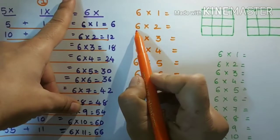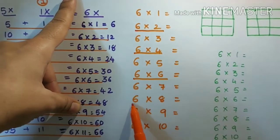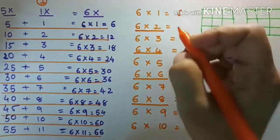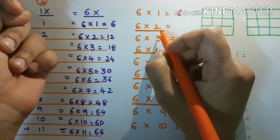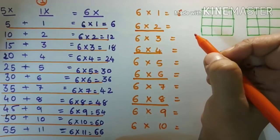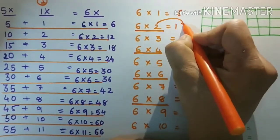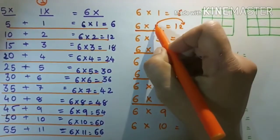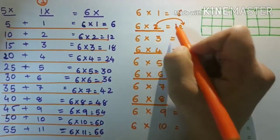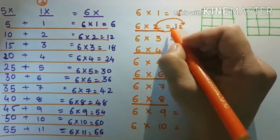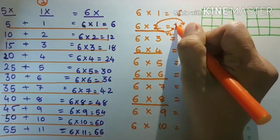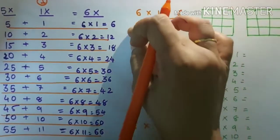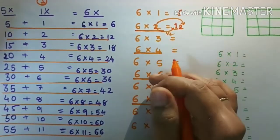In this second method, first draw lines like this. Now, six ones are six. After that, six twos: take half of two, which is one, and write down two as it is. So your answer is twelve. Half of two is one — write down one here, and write two as it is.